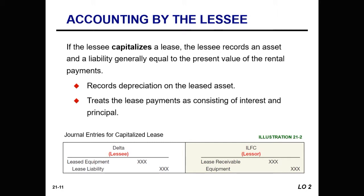For accounting purposes of the lessee, all leases may be classified as operating leases or capital leases. For a lease to be recorded as a capital lease, the lease must be non-cancelable and meet one of the following criteria: the lease transfers ownership of the property to the lessee at the end of the lease; the lease contains a bargain purchase option; the lease term is equal to 75% or more of the estimated economic life of the leased property; or the present value of the minimum lease payments, excluding executory costs, equals or exceeds 90% of the fair value of the leased property. If the lease meets none of these four criteria, it should be classified and accounted for as an operating lease.